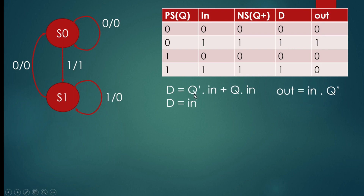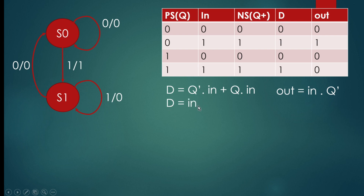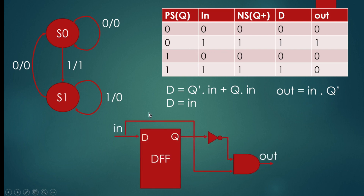Now let us find the expressions for D and out. D is 1 at two places: here the expression is Q_bar · in, and here it is Q · in. Since 'in' is common and Q_bar + Q equals 1, we can reduce the expression for D to simply 'in'. For output, it is 1 at only one place, giving the expression: out = Q_bar · in.